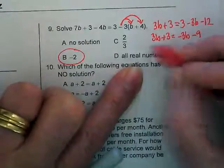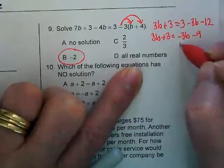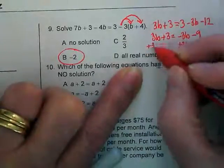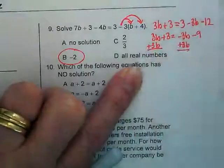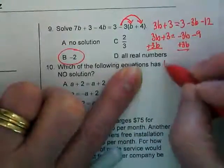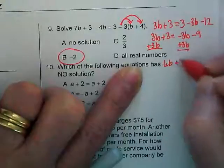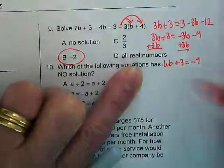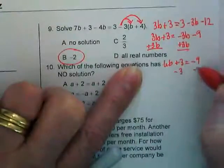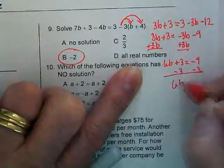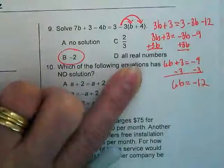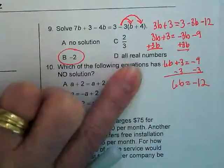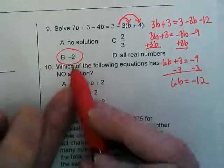But that's not really what happens. If I add this 3b, I end up with 6b plus 3 equals negative 9. And then if I subtract this 3, I end up with 6b is equal to negative 12. What am I going to divide by? Positive 6 going into a negative 12 is going to give me negative 2.